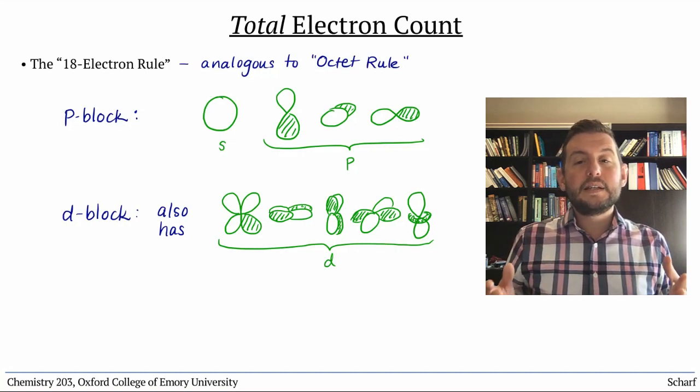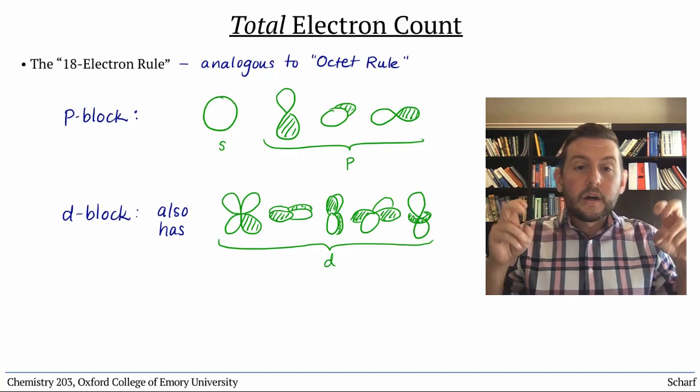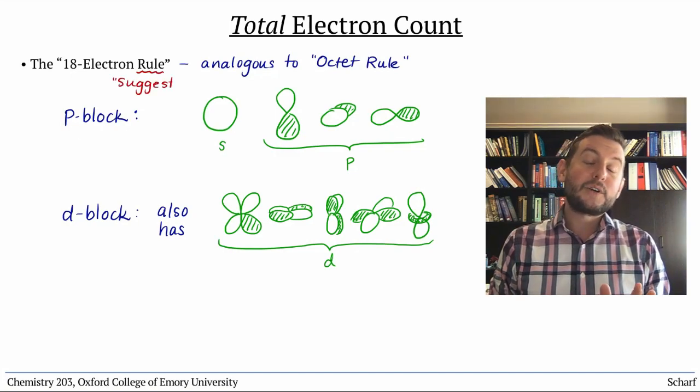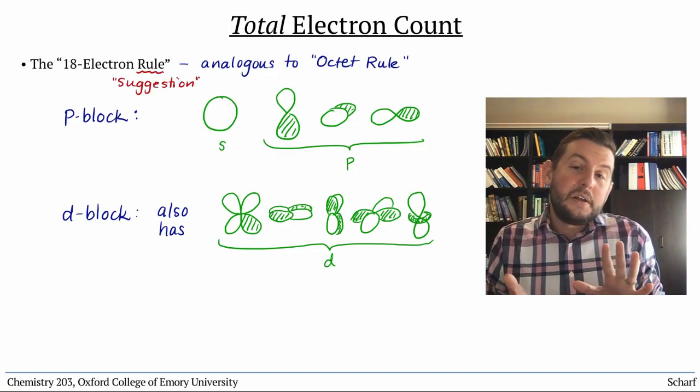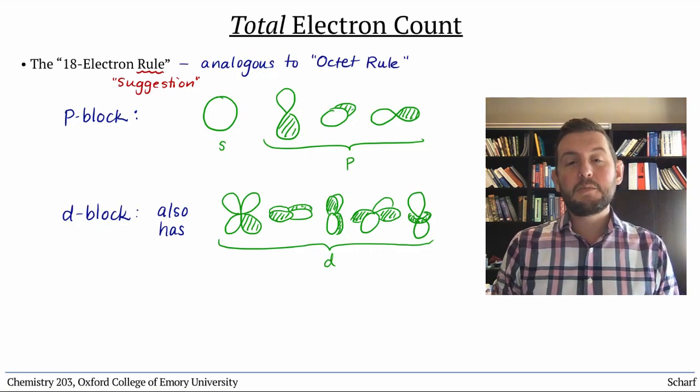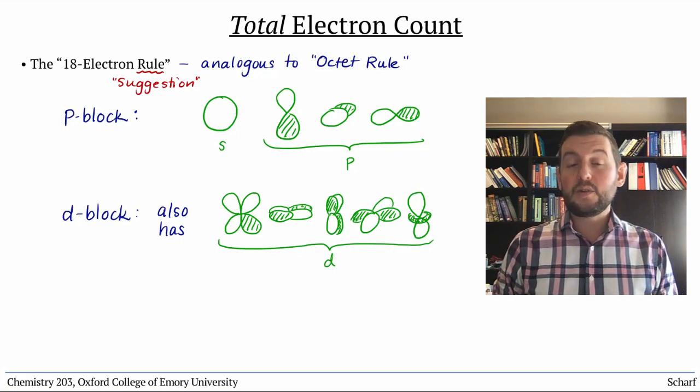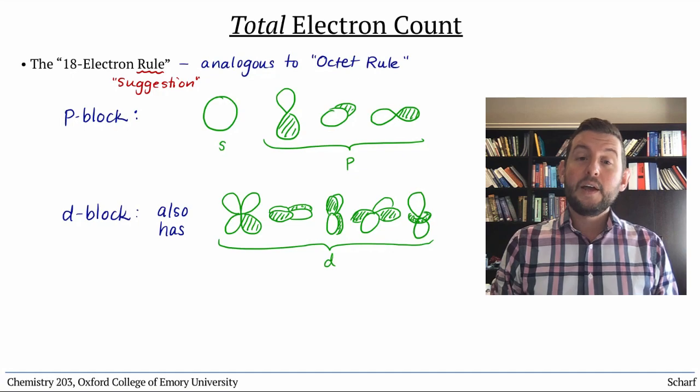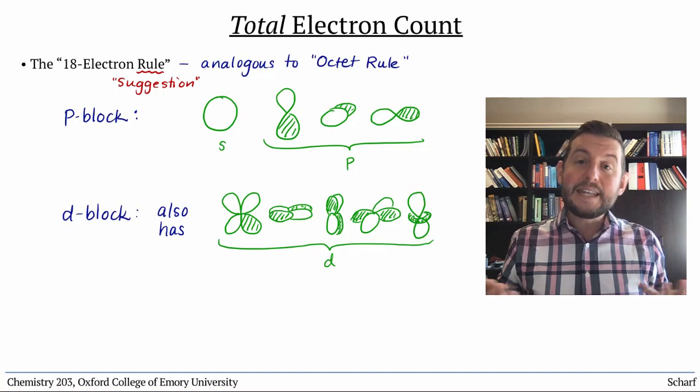Now, mind you, this 18 electron rule probably ought to be called the 18 electron suggestion, because lots and lots of transition metal complexes don't really obey it, but it is a valid tendency.